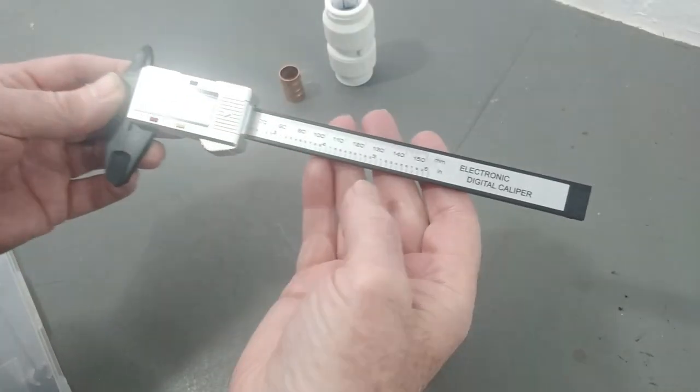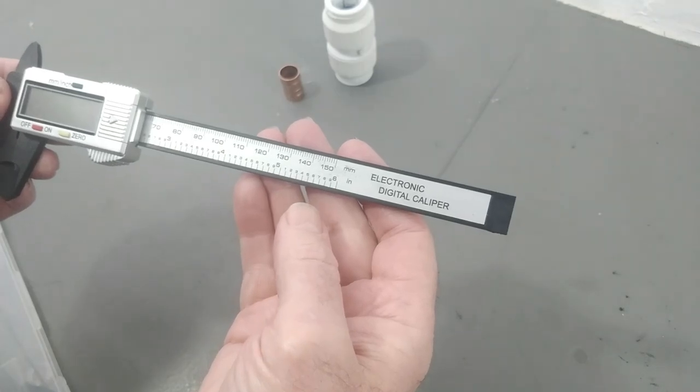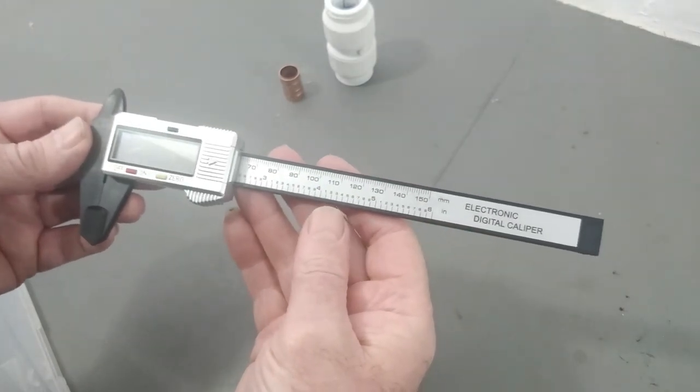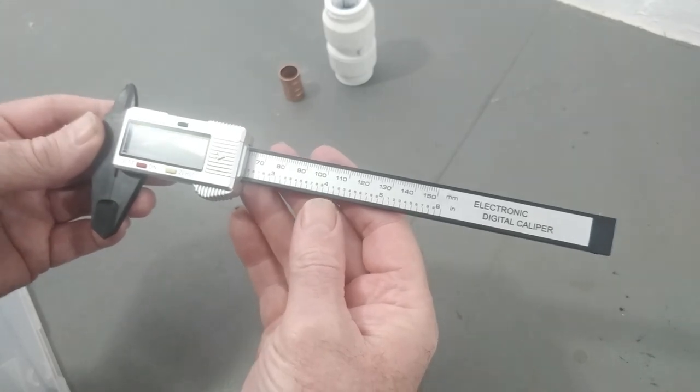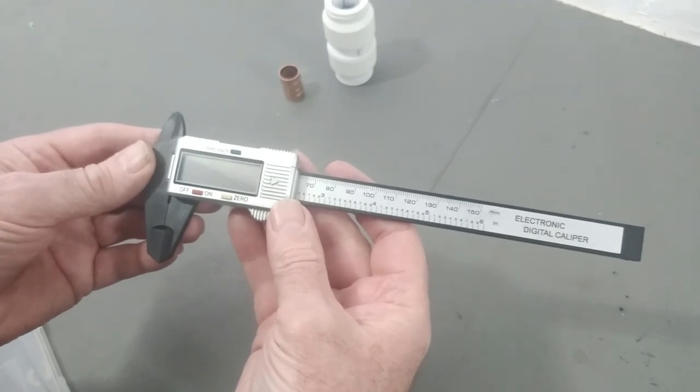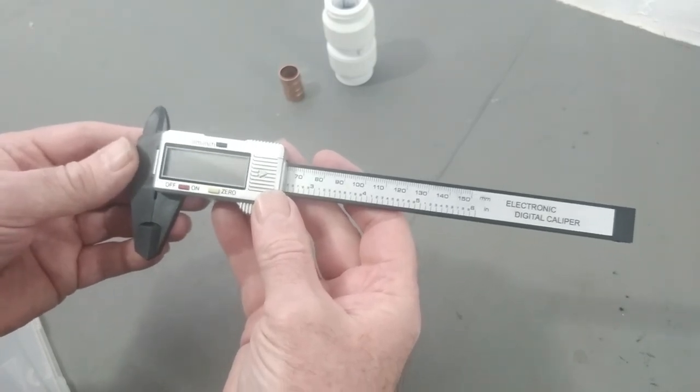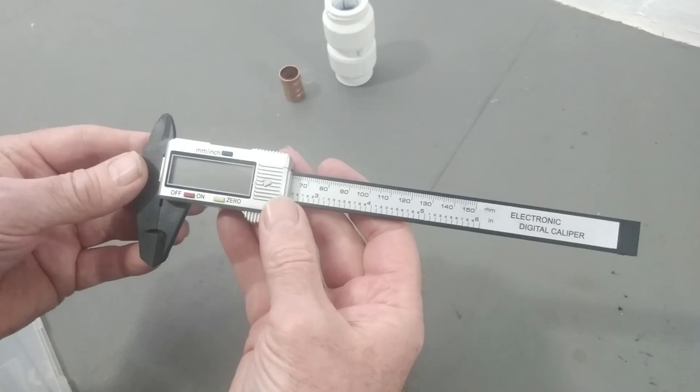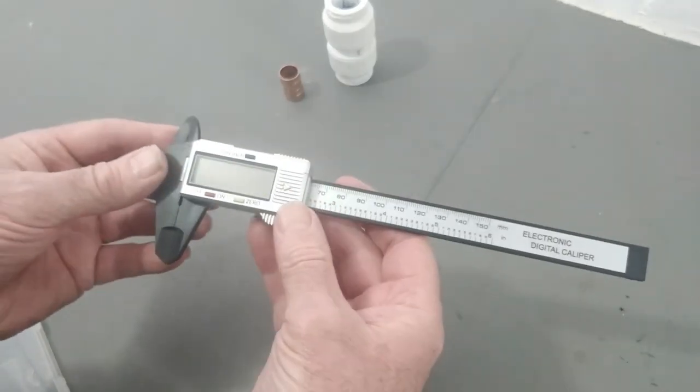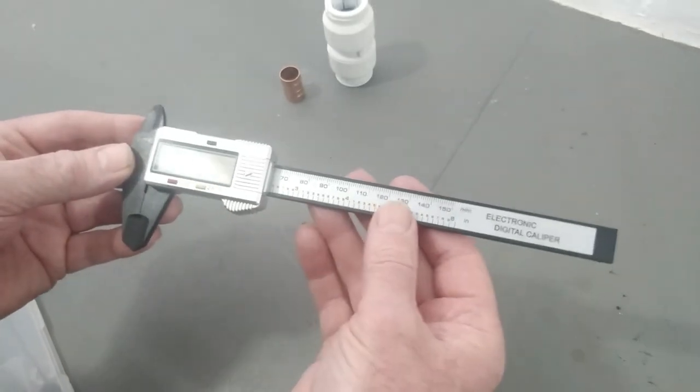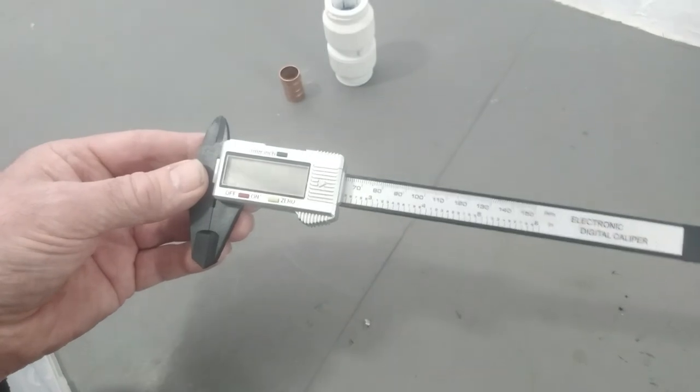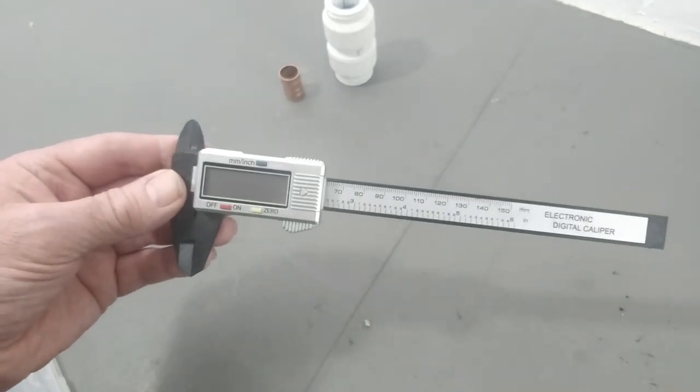So here it is guys, the electronic digital caliper, also known as the vernier gauge or the vernier caliper. A few years ago you'd only find these in engineering workshops, but now they've got these little cheaper versions. They're only plastic, but the original ones would have been stainless steel. But they still give a really good accurate measurement.